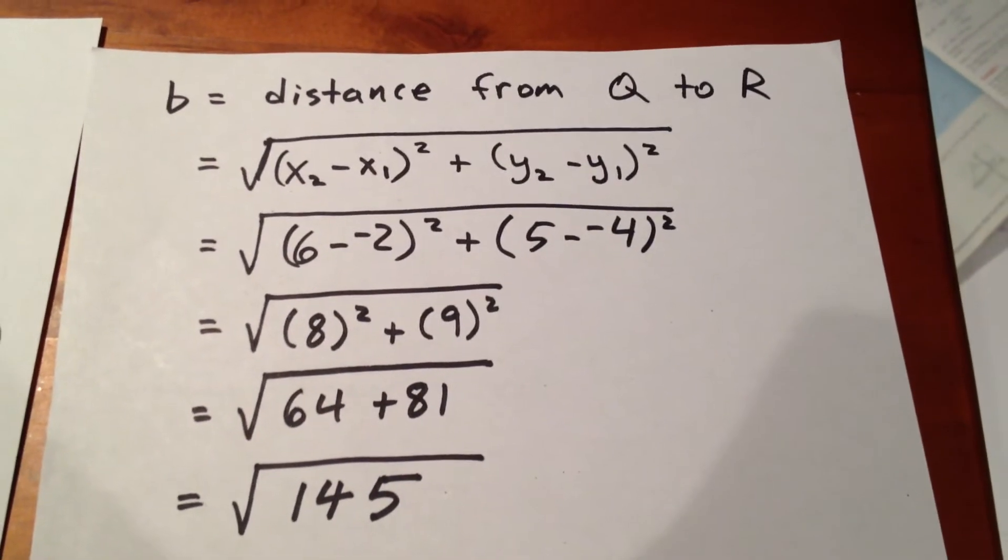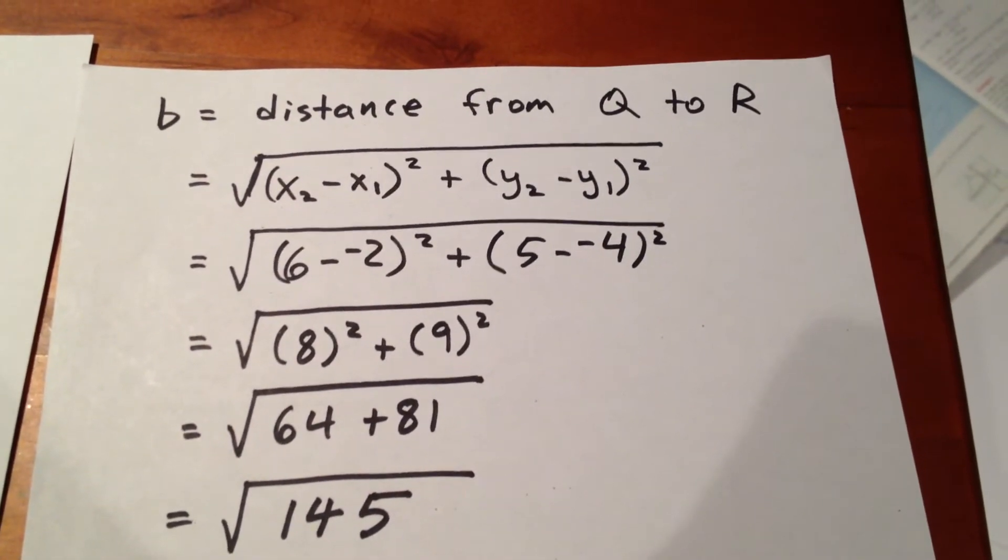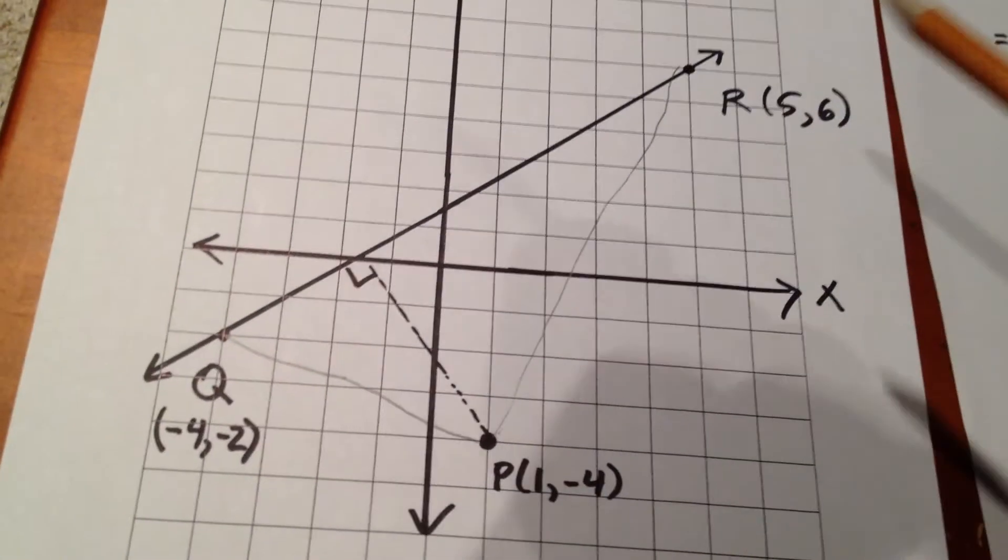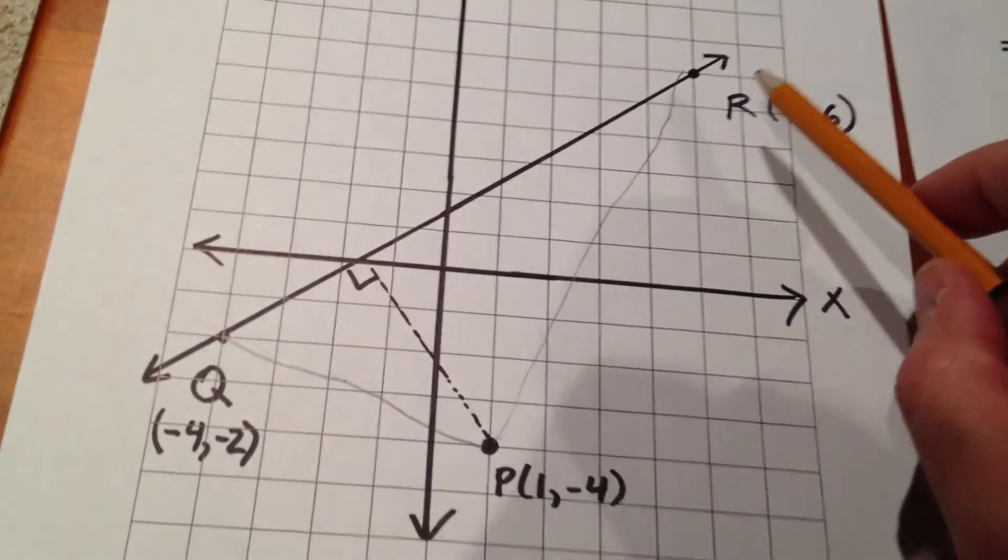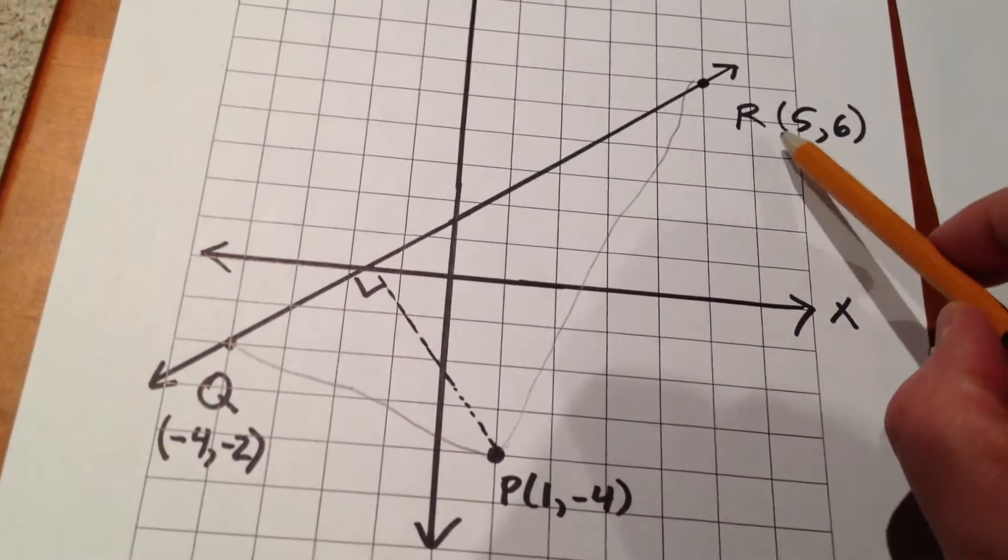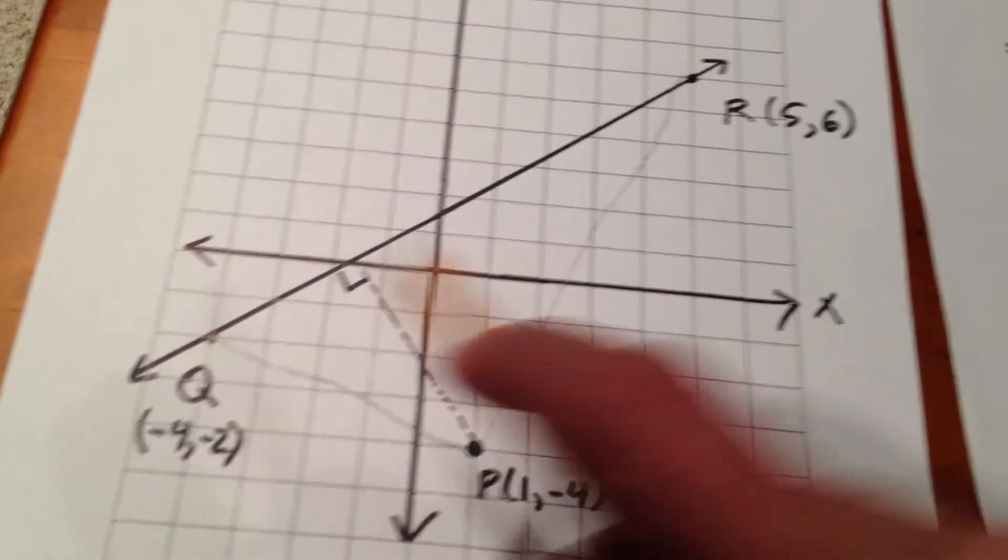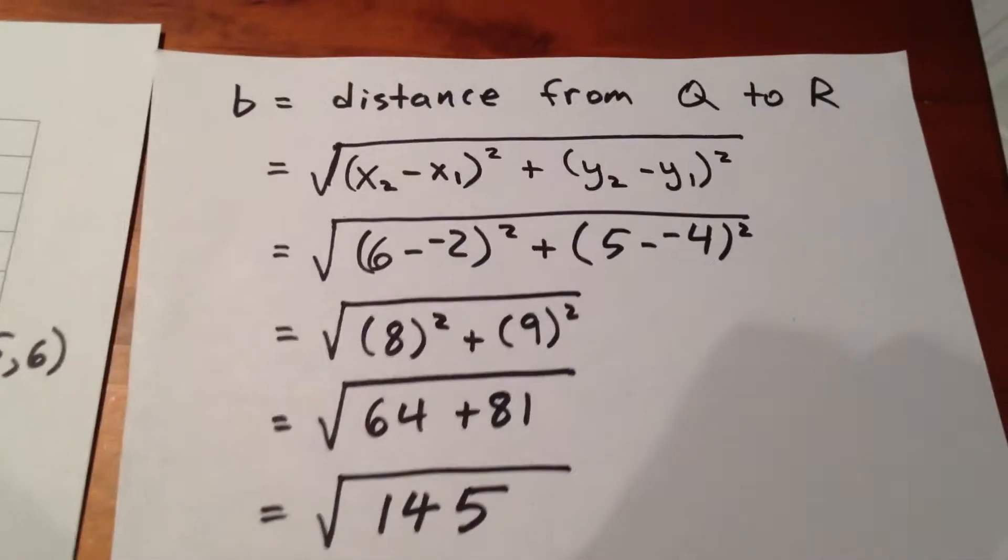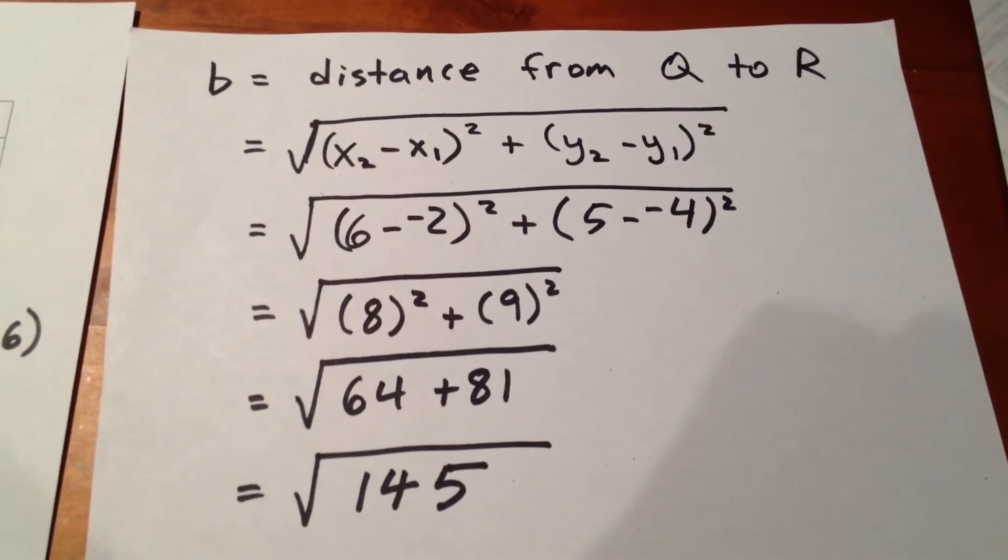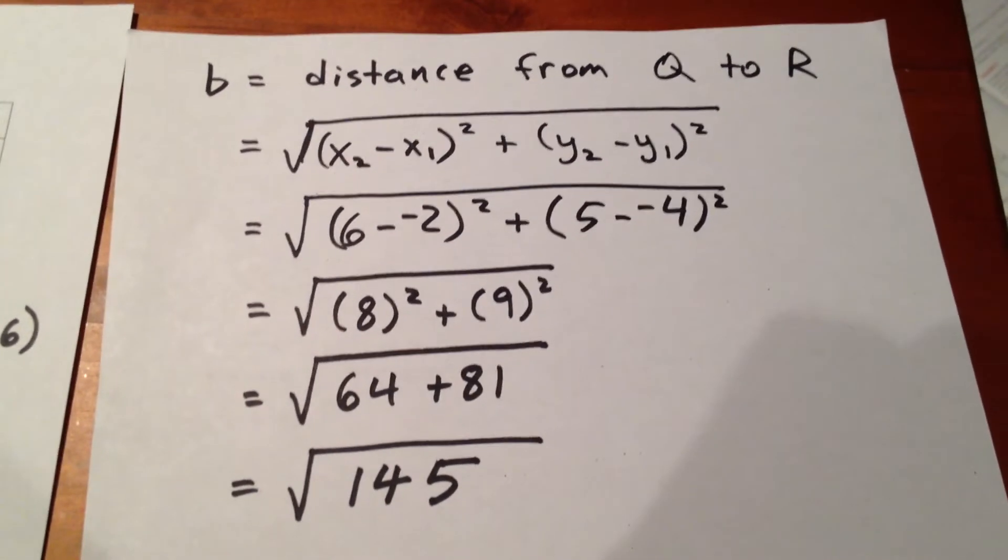6 minus negative 2 is 8. 5 minus negative 4 is 9. Because those are the points in question. 6 minus negative 2, and 5 minus negative 4. I put those backwards into the formula for some reason, but the answer is accurately expressed as 145, square root.